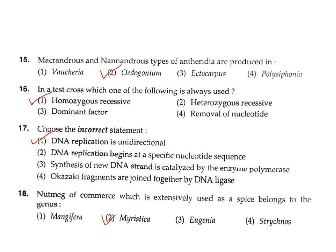Question 16: In a test cross, which of the following is always used? In a test cross, the F1 individual is crossed with a homozygous recessive parent. Correct answer Option 1 — homozygous recessive. Question 17: Choose the incorrect statement about DNA replication. Option 1 — DNA replication is unidirectional — this is incorrect because it is bidirectional.